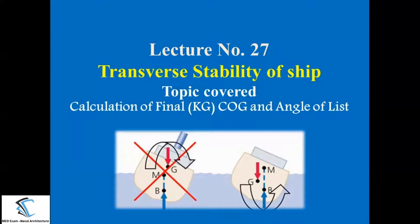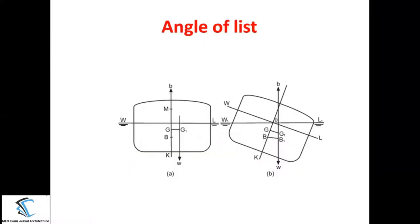In this lecture we will continue with the transverse stability of the ship. Specifically, I am going to cover the calculation of final KG, that is the center of gravity, and the angle of list. First of all, let us understand what is the meaning of angle of list. If the ship inclines because of an internal agency like uneven distribution of cargo, ballast water, or fuel oil within the ship, you will find inclination on either side of the center line — towards the starboard side or port side. Whatever inclination you see, that we call the angle of list.